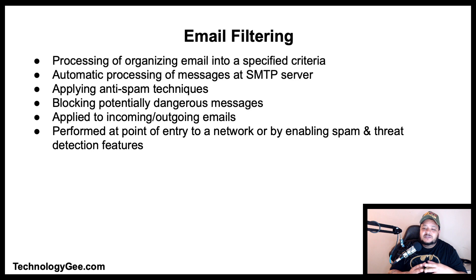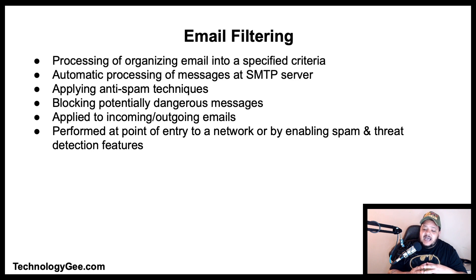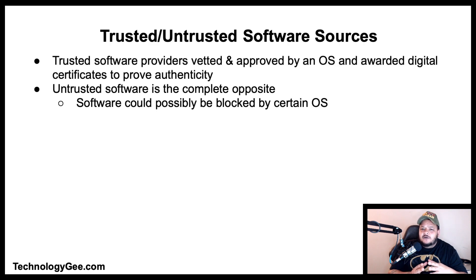Next we have email filtering, which is the processing of email according to specific criteria. It most often refers to the automatic processing of messages at an SMTP server, applying anti-spam techniques and blocking potentially dangerous messages. Filtering can be applied to both incoming and outgoing emails, and can be performed at the point of entry to a network or by enabling spam and threat detection features built into email clients or security software.